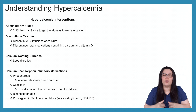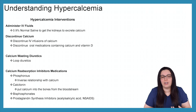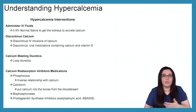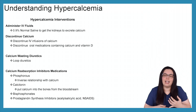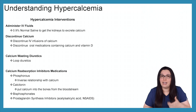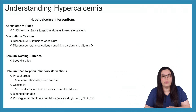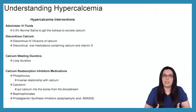When it comes to interventions, there's quite a bit we as nurses can do to help with hypercalcemia. We can begin by administering IV fluids — 0.9% normal saline — to help the kidneys start excreting some of that excessive calcium. We want to discontinue calcium: discontinue any IV infusions of calcium, as well as any oral medications that contain calcium and vitamin D. We also want to stop that reabsorption of calcium. We can give calcium-wasting diuretics, such as loop diuretics — that's huge. Between IV fluids and loop diuretics, that can really help the process of excreting that excessive calcium. We can also give calcium reabsorption inhibitor medications as well.